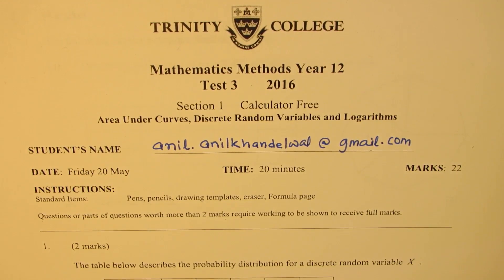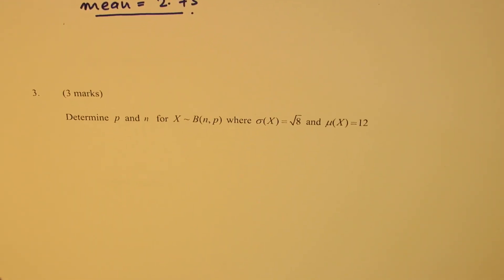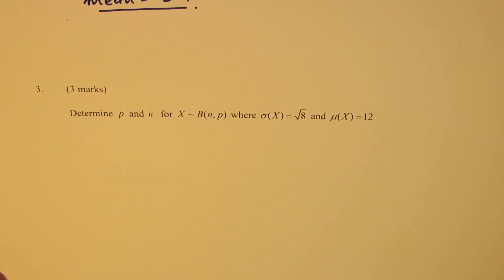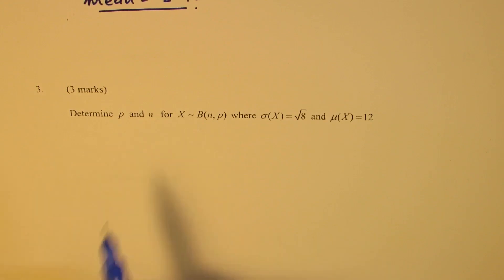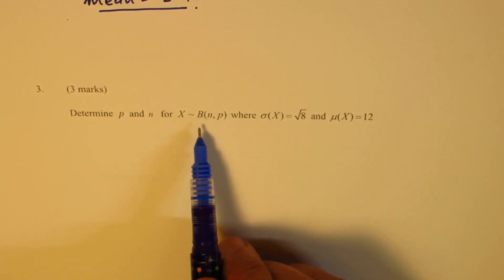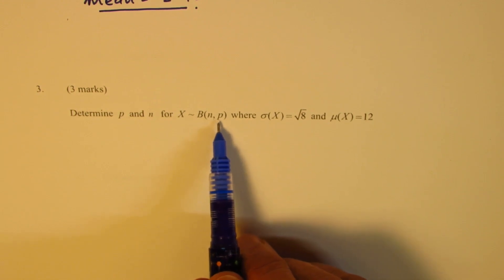The third question in this case: Determine p and n for X. This is binomial distribution where n is the number of trials and p is the favorable probability.